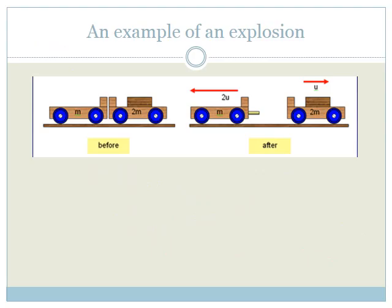In the last example we did a collision; now we're doing an explosion — same principle: P before equals P after. Initially, two tracks are stuck together, so we add their masses: m + 2m = 3m total. They are then propelled away from each other by a spring in opposite directions. We again choose to the right as positive, which means the leftward direction will be negative.